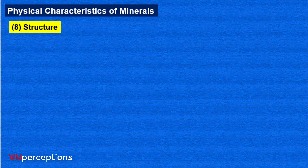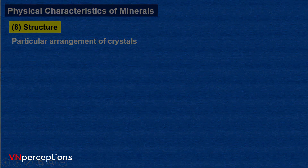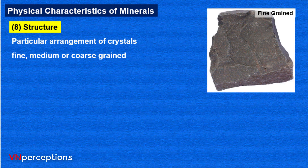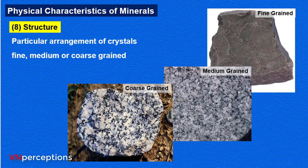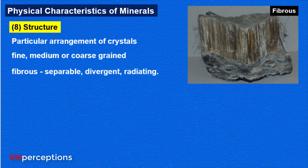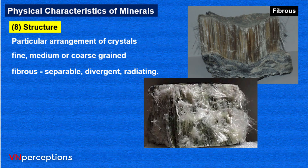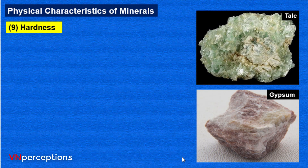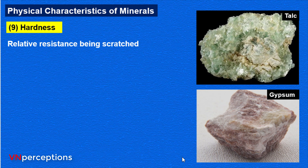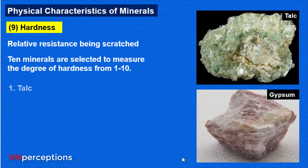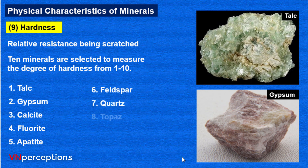Then it is structure — the particular arrangement of crystals. It can be fine, medium-sized, or coarse grade crystals. It can also be fibrous, with separable, divergent, or radiating forms. Next is hardness, which refers to relative resistance to being scratched. Ten minerals are selected to measure the degree of hardness from 1 to 10: talc is the softest, then gypsum, calcite, fluorite, apatite, feldspar, quartz, topaz, corundum, and diamond is the hardest.